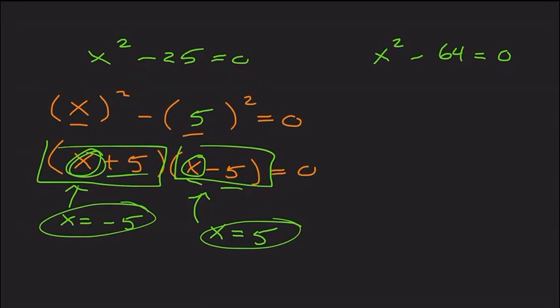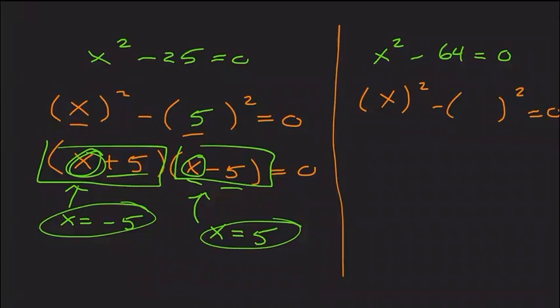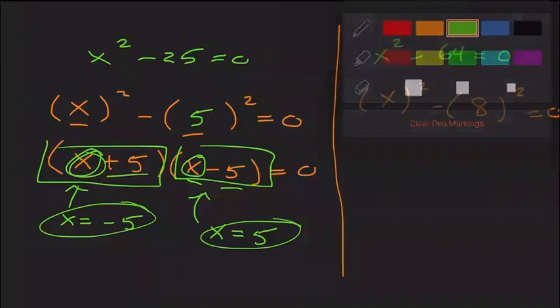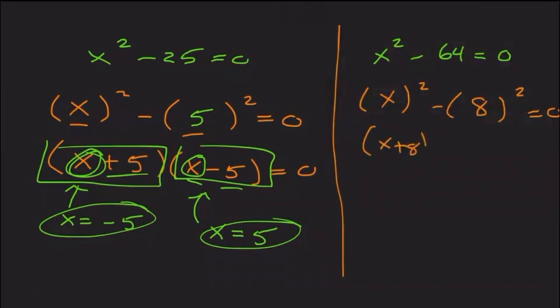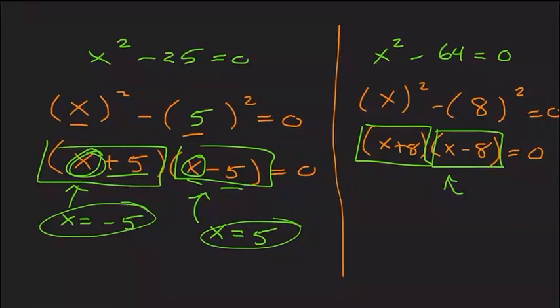This next one we're going to solve using the difference of two squares method as well. We know it's going to be something squared minus something squared, so this will be x and 8, because 8 times 8 is 64. It factors into x plus 8 times x minus 8. Using inspection: what makes the first parenthesis equal 0 is x equals positive 8, and for the second it's x equals negative 8.